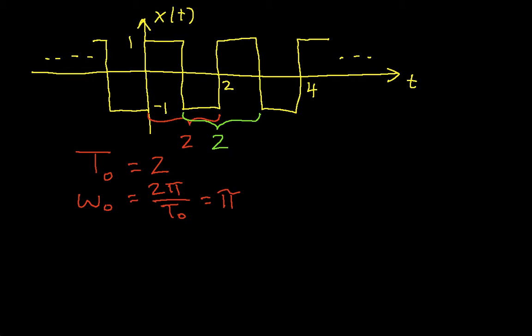With this, we're in a position to begin computing the complex exponential Fourier series coefficients. We'll start with the easy one, c₀, which is actually just the average of the waveform, so I can write it as 1 over 2, that's t₀, times the integral over 1 period of the waveform of x(t). In this case, I'll integrate from 0 to 2.